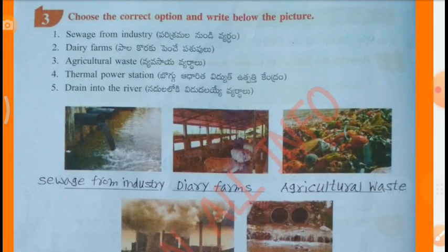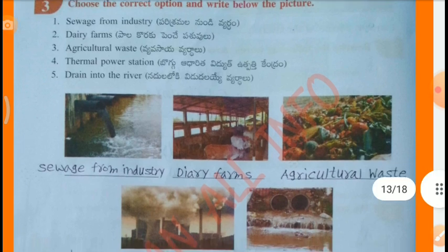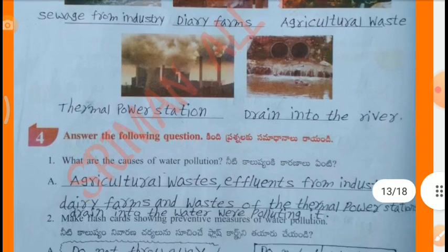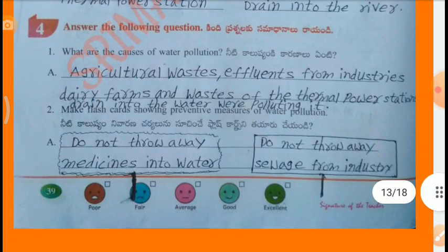Choose the correct option and write below the pictures: Sewage from industry, Dairy farms, Agriculture wastage, Thermal power station, Drain into the river. First picture is sewage from industry, second one dairy farms, third one agriculture wastage, fourth one thermal power station, fifth one drain into the river. Answer: What are the causes of water pollution? Agriculture wastages, effluents from industries, dairy farms and wastages of the thermal power station drain into the river, polluting it.